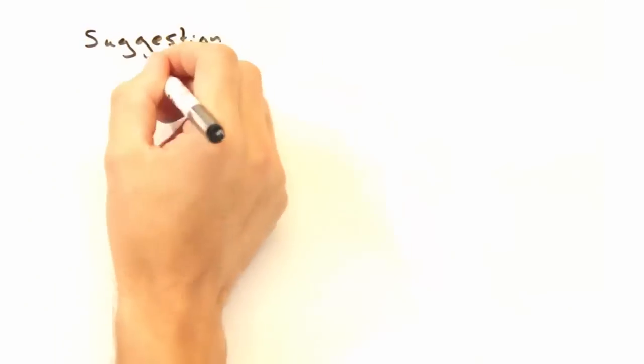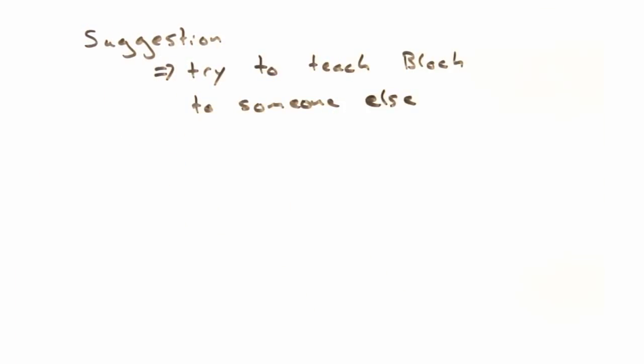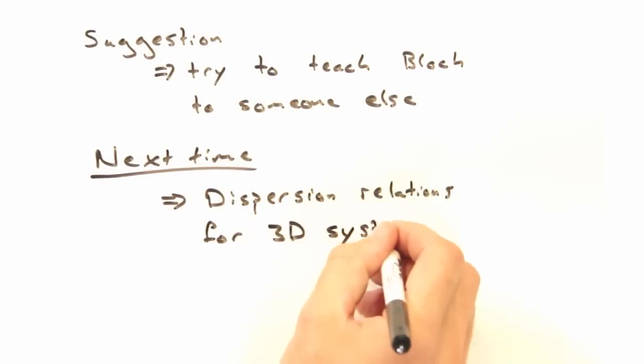As a final suggestion, you might do well to try to explain Bloch's theorem to someone else. Since Bloch forms the basis of almost all cool electronic properties, it would be good to get your head around this derivation. Thanks for watching today's solid state physics in a nutshell. Next time, we'll look at dispersion relations for 3D systems and learn how to label points within the first Brillouin zone. See you then!